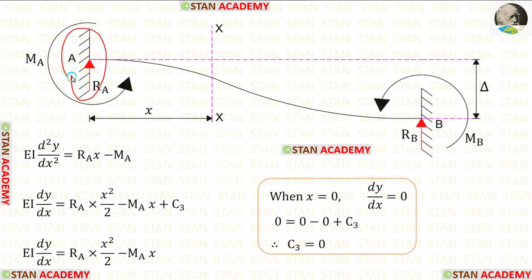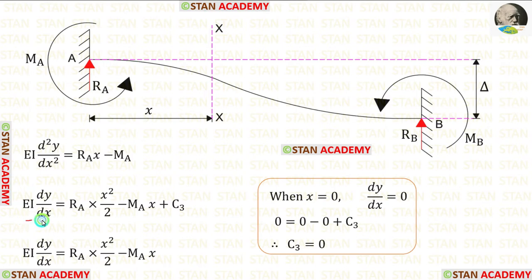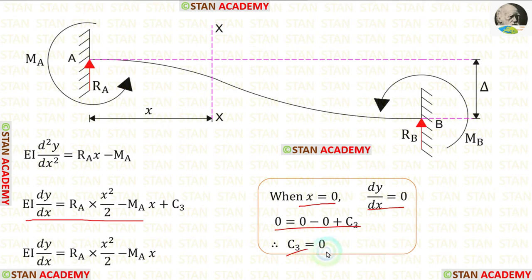In the fixed support, there will be no slope. So, when x is 0, the slope dy/dx is 0. In this equation, let us apply x = 0 and dy/dx = 0. When we do that, we are getting C3, which is 0.